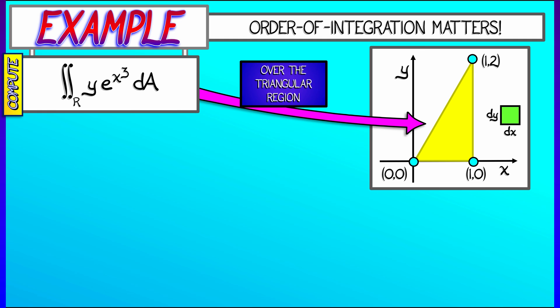Let's set this up. Let's pick an order of integration. Let's say we integrate with respect to x first and then y, so that we have the double integral of y e to the x cubed dx dy.